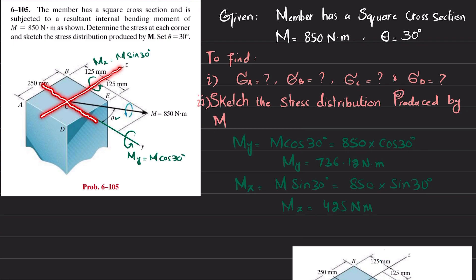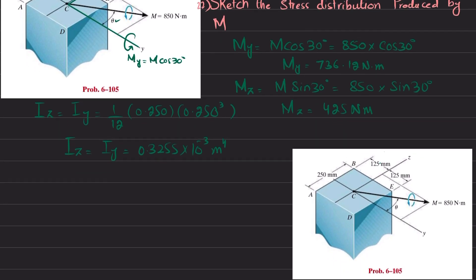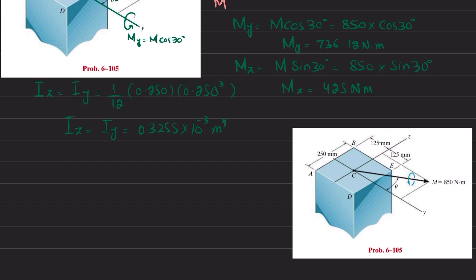Now for the moment of inertia: whether you take Iz or Iy, both will be the same because this is a square cross section. So Iz equals Iy, and that equals (1/12)·b·h³, where b = 0.250 m and h = 0.250 m. Calculating this gives Iz = Iy = 0.3255 × 10⁻³ m⁴.